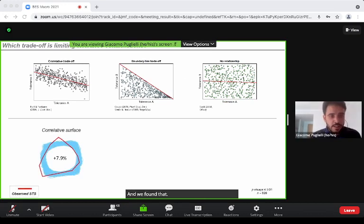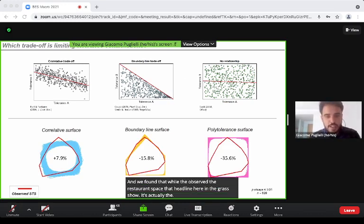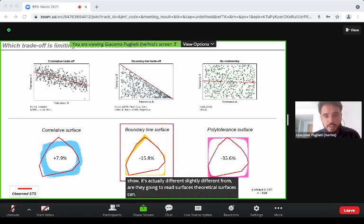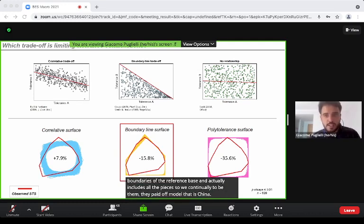We found that while the observed stress-tolerant space in the red line shown in the graph differed slightly from all the considered theoretical surfaces, the boundary line surface perfectly matches the boundaries of the stress-tolerant space and actually includes all the vertices. So we consider it to be the trade-off model that is generating the stress-tolerant space.